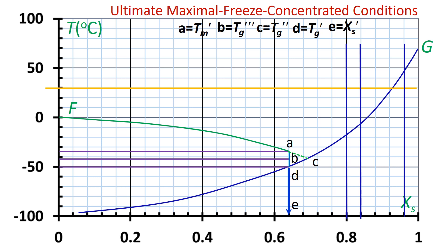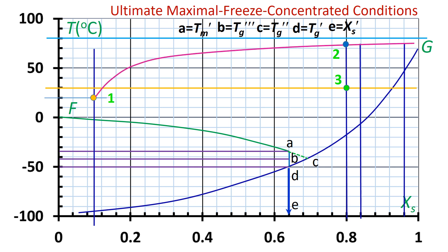Now we can find out what would happen if we store the dried apple at minus 10°C. First, I would like to locate the drying conditions at points 0.1, 0.2, 0.4, 0.6, and 0.7. If we store the dried apple at minus 10°C, the location of dried apples at 20% moisture content will be at point 0.8, at 16% moisture content at point 0.9, and at 4% moisture content at point 0.10.